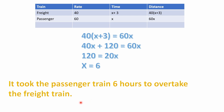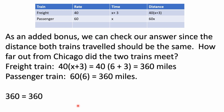We can verify the answer. Both trains should have traveled the same distance. For the freight train: 40(x + 3) = 40(6 + 3) = 40 × 9 = 360 miles. For the passenger train: 60x = 60 × 6 = 360 miles. Both equal 360 miles — the answer checks out.